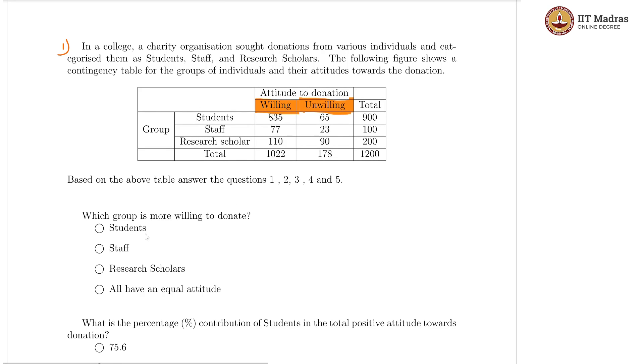They are asking which group is more willing to donate. I think we should be comparing the percentages here. Let me add two more columns: willing percentage and unwilling percentage. The willing percentage in students is going to be 835 by 900, 100 into 100. That is essentially 835 by 9, which should come to about 92.8 percent.